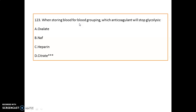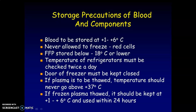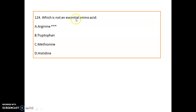Question 123: When storing blood for blood grouping, citrate is used to stop glycolysis. Important precautions for blood storage: blood is stored between 1 to 6 degrees Celsius and must never be frozen due to the presence of red cells. Fresh frozen plasma is stored below minus 18 degrees Celsius. Refrigerator temperature must be checked twice a day, the freezer door must be kept closed, plasma must never be thawed above 37 degrees Celsius, and thawed plasma must be kept at 1 to 6 degrees Celsius and used within 24 hours.